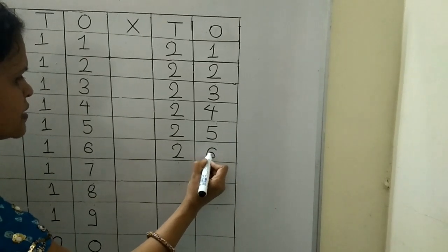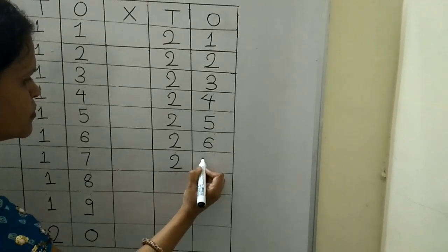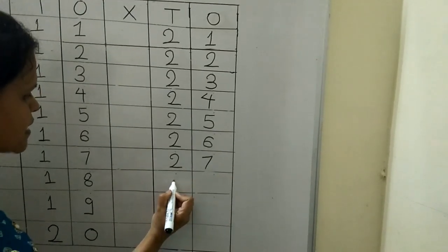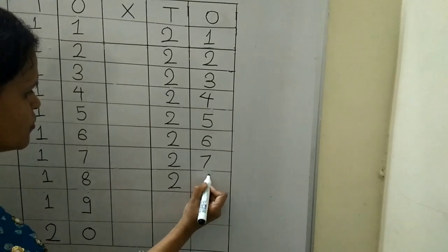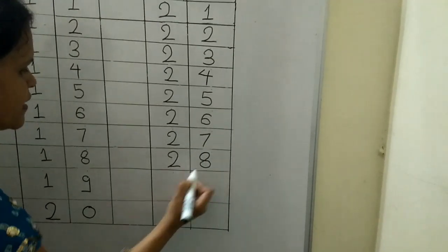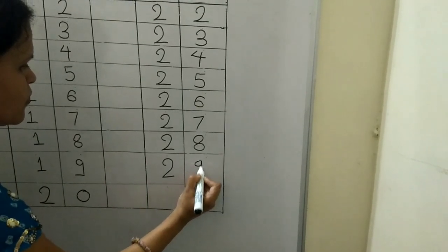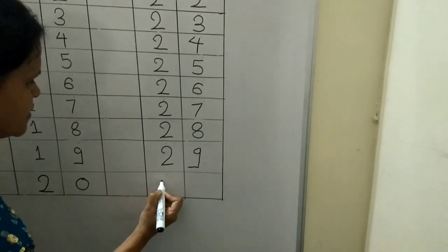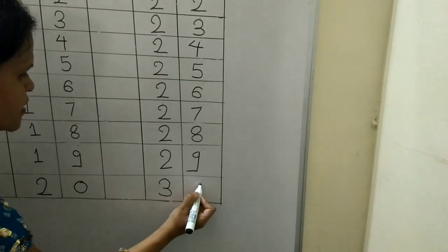2, 6, 26. 2, 7, 27. 2, 8, 28. 2, 9, 29. 3, 0, 30.